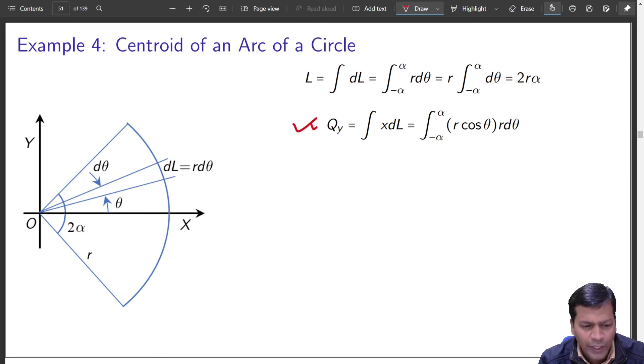So Qy. That will be equal to x DL, x DL. Each of this element will have its own x. That will be given as R cos theta. Is it okay? X that is the distance of this. That is x. That is given by R. This is your R cosine theta that is this distance. So that is your x. So R cos theta and DL will be R D theta. That comes here. So x DL will be given by this. Clear? So that is Qy. Qy is done.